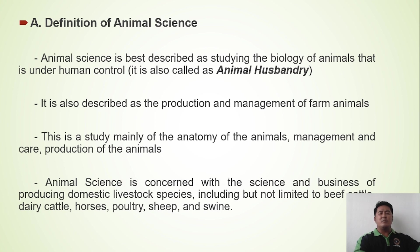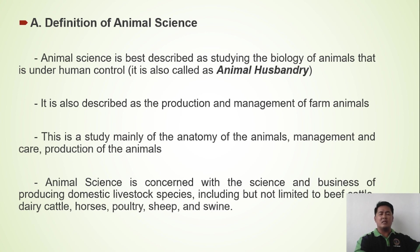Production means to reproduce something. Management means how you are going to handle the animals in your farm. Animal science is a study mainly of the anatomy of the animals, management and care, and care production of the animals. We will be discussing and studying management practices and how to care for the different animals, especially in the different animal productions that we are going to be involved in.